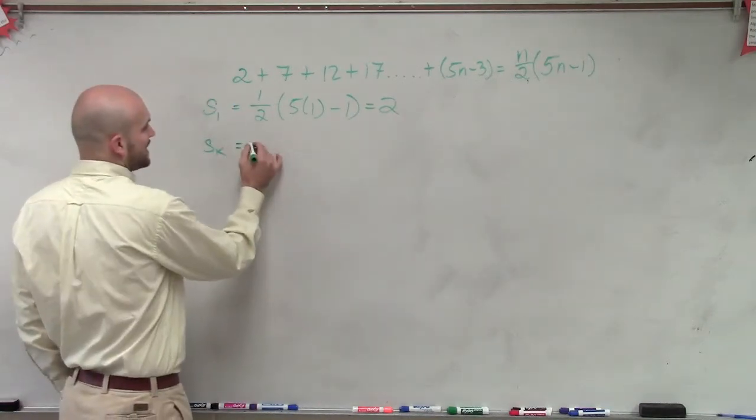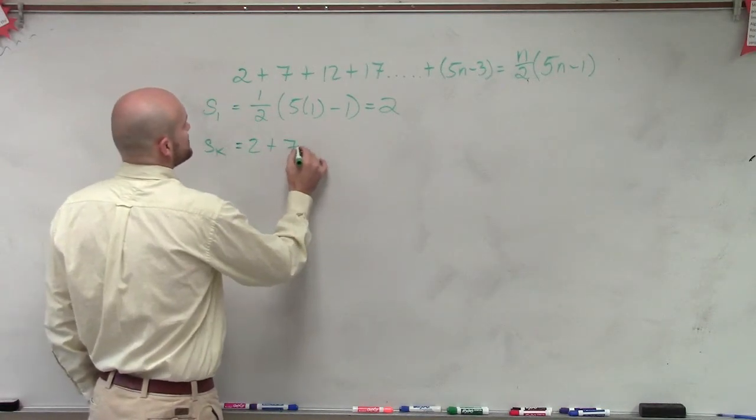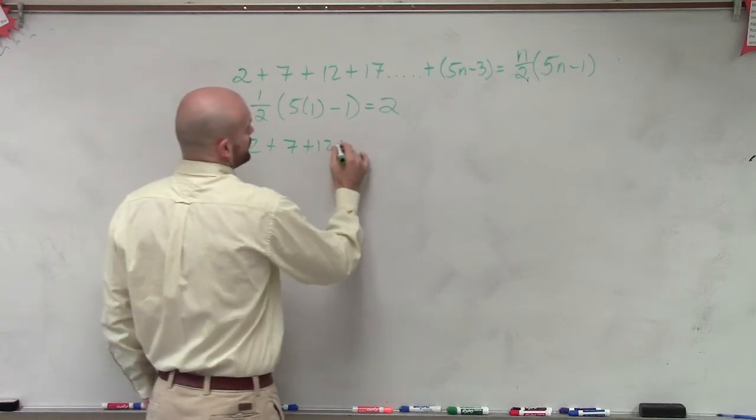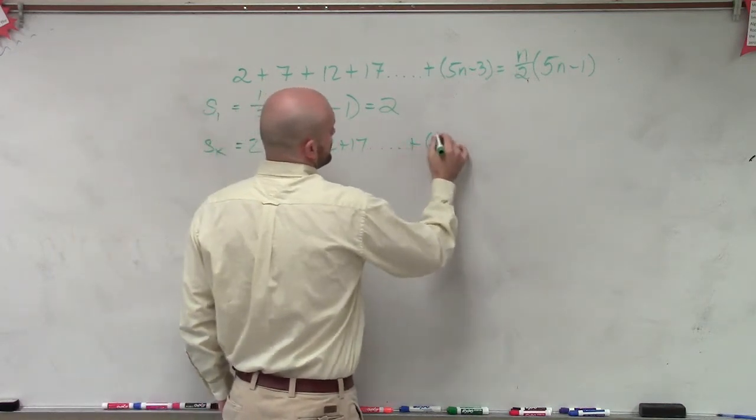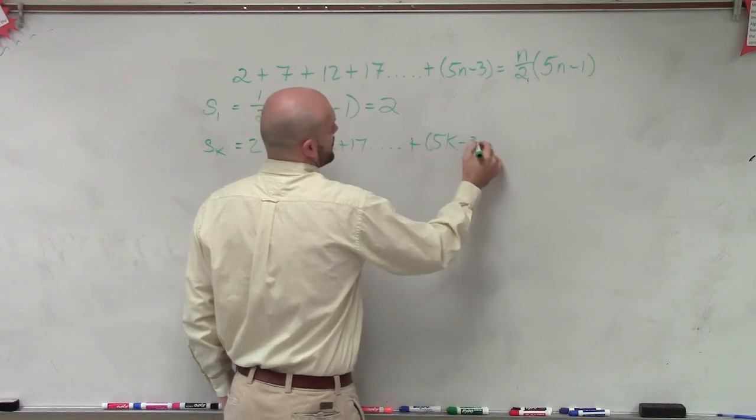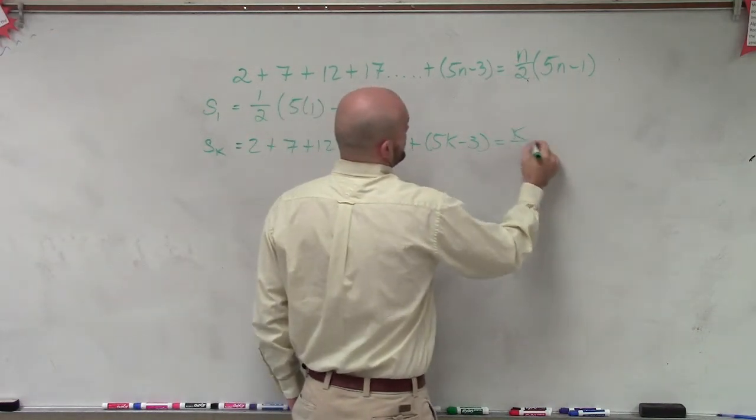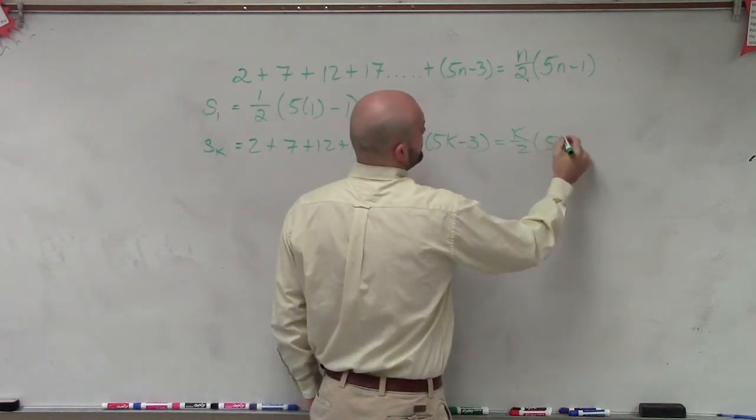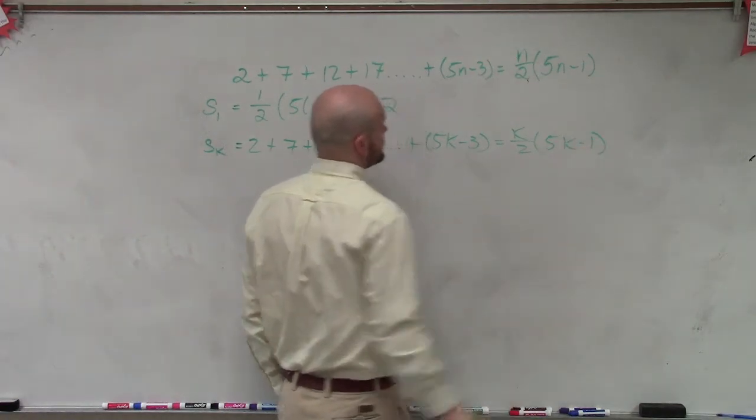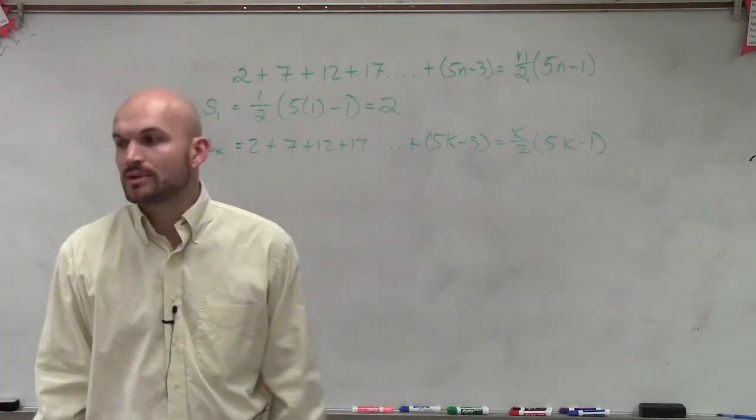So therefore, s of k is just going to be the exact same: 2 plus 7 plus 12 plus 17 dot dot dot plus 5 times k minus 3 equals k divided by 2 times 5k minus 1. So now we just rewrite our formula in k.